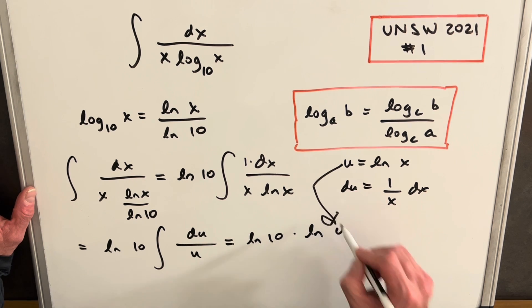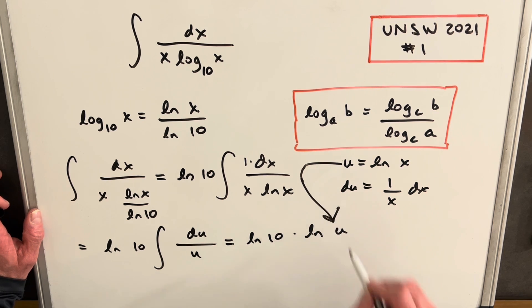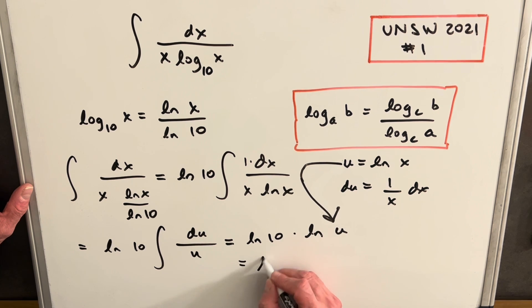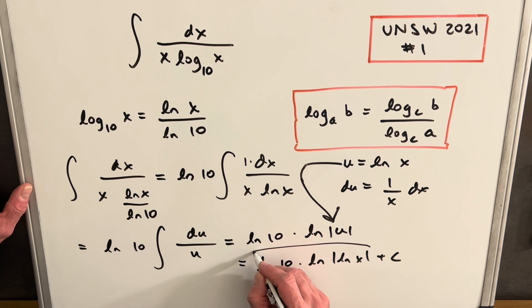Then we can back substitute. For our final solution, we're going to have ln 10 times - oh I forgot an absolute value there - natural log of the absolute value of ln x plus c. And that's it, we're done.